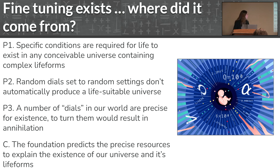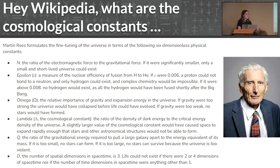But there are specific conditions that are required for life to exist. And random dials set to random settings really shouldn't automatically produce a life-stable universe. But this is the assumption you have to work under if you're a materialist. A number of dials in our world are very precise for our existence. To turn any of them just slightly would result in annihilation. The foundation would actually predict these precise dials tuned in precise ways for life, rather than materialism. If you want to actually know what those are, here's a classic thing to Google. Google Martin Rees and the cosmological constants. You'll find tons of constants, just a few different examples, mainly of the physics constants that are fine-tuned for the existence of life. But you should know that there are about hundreds and hundreds of things that are claimed fine-tuned and gone into existence. So there's no shortage of discussion in this particular section of natural theology.